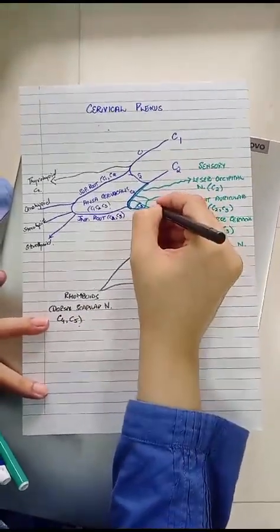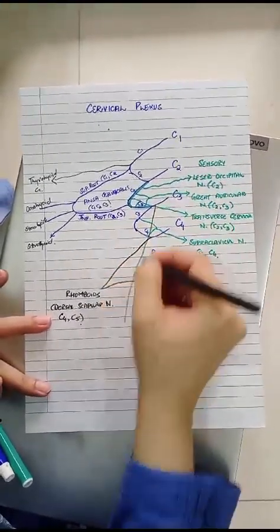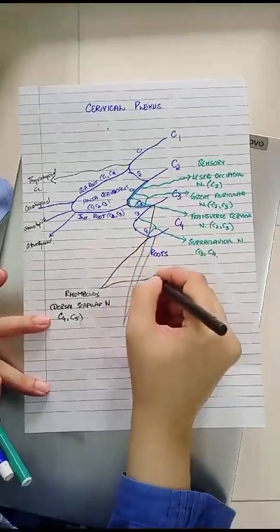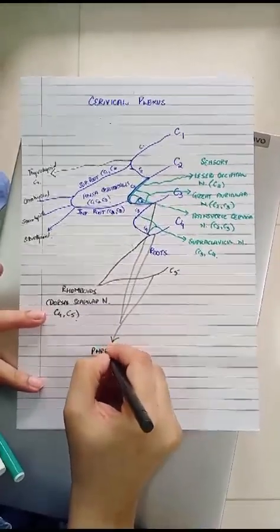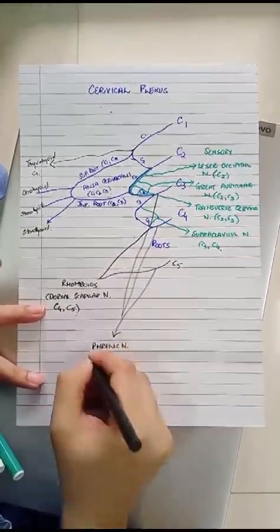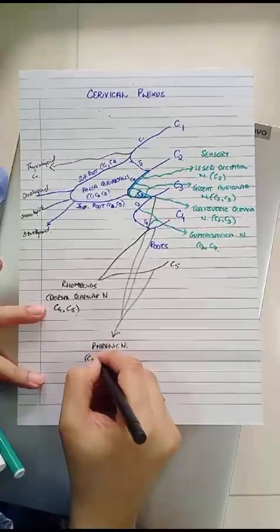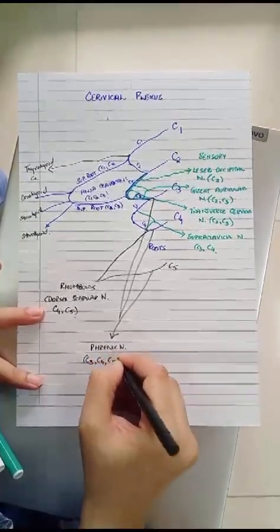Another motor contribution going to the diaphragm is from contribution by C3, C4 and C5 and that is the phrenic nerve. As we say that C3, C4 and C5 keep the diaphragm alive.